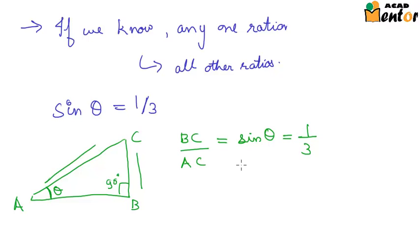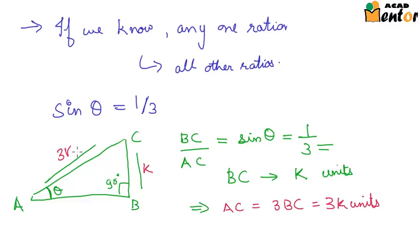If we assume that BC is any number, say K, if BC is K units, then by this relationship we would have AC equal to 3 times BC or 3K units. So this becomes K, this becomes 3K units.